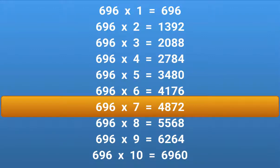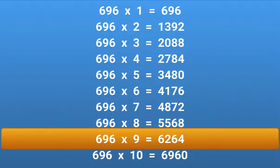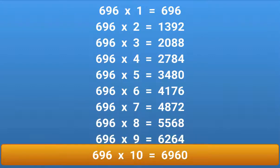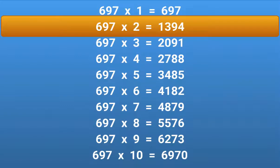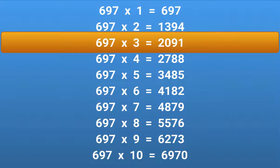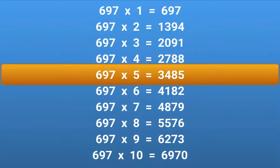696 × 7 = 4872. 696 × 8 = 5568. 696 × 9 = 6264. 696 × 10 = 6960. 697 × 2 = 1394. 697 × 3 = 2091. 697 × 4 = 2788.